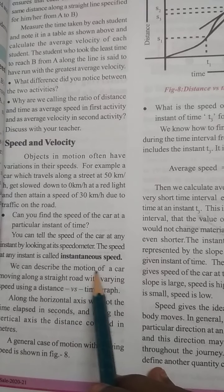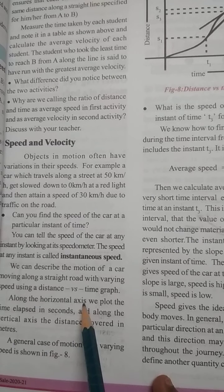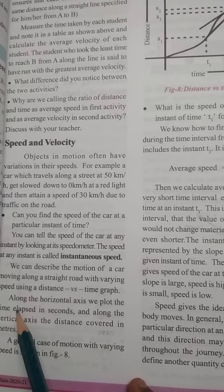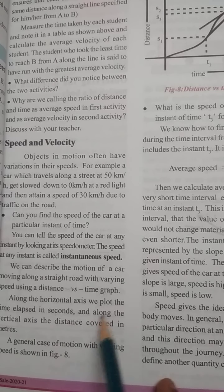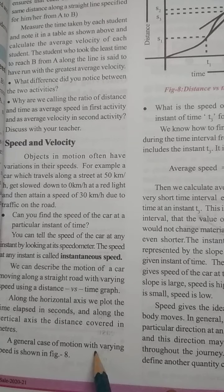We can describe the motion of a car moving along a straight road with varying speed using a distance versus time graph. Along the horizontal axis, we plot the time elapsed in seconds and along the vertical axis, the distance covered in meters. General case of motion with varying speed is shown.